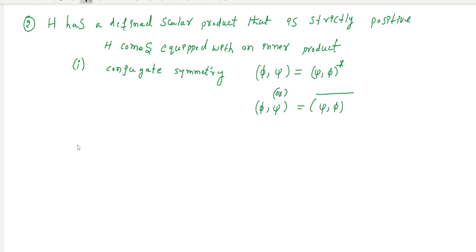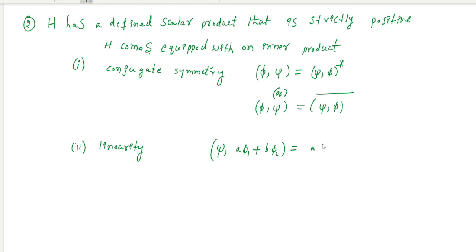Next, the inner product has the linearity property. The scalar product of psi with phi is linear with respect to phi, which means: the inner product of psi with (a·phi1 + b·phi2) equals a times the inner product of psi with phi1, plus b times the inner product of psi with phi2.